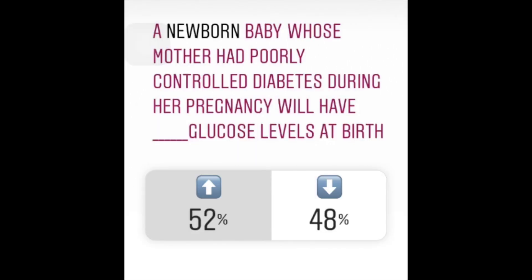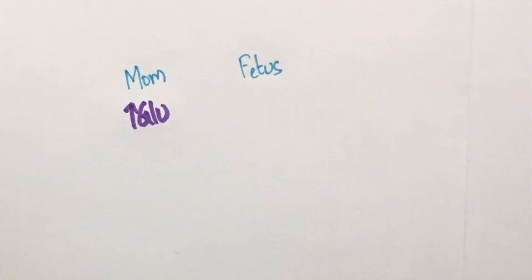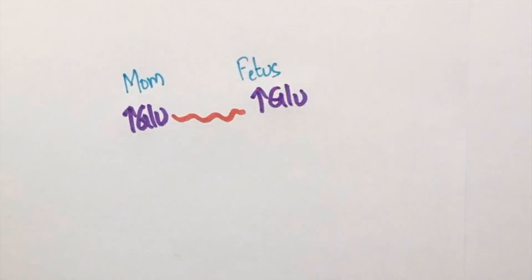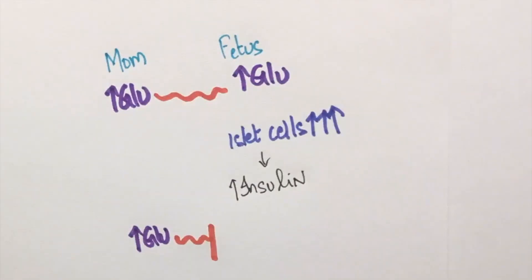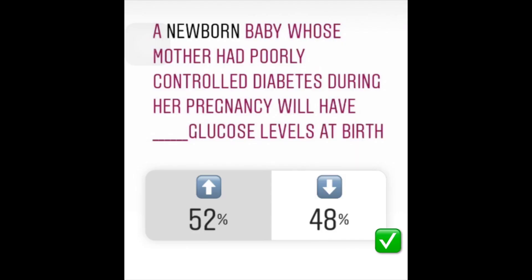Question number four: a newborn baby whose mother had poorly controlled diabetes during her pregnancy will have dash glucose levels at birth. When a pregnant woman has poorly controlled diabetes, a lot of glucose is transported to the fetus. In order to cope with this, the islet cells of the fetus will undergo hyperplasia. So, there is a lot of insulin in the fetus. At birth, the newborn stops receiving continuous glucose from the mother, so now there is a lot of insulin and very little glucose. This results in hypoglycemia.